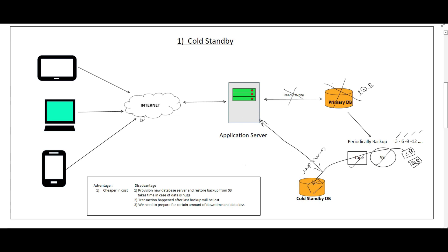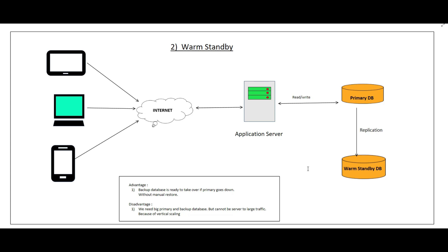The advantage of cold standby is that it's very cheap, since backups are stored on tape or S3. The disadvantages are: provisioning a new database and restoring a large backup can take significant time; and because backups are periodic, data between intervals can be lost. For example, if a backup runs at 3 PM and the next at 6 PM, and the DB goes down at 4 PM, one hour of transactions is lost. This option is not suitable for customer-facing applications but can work for internal company use.